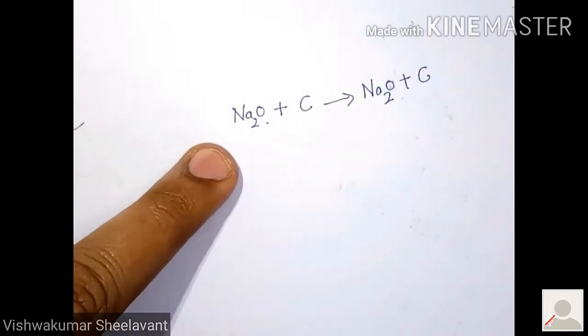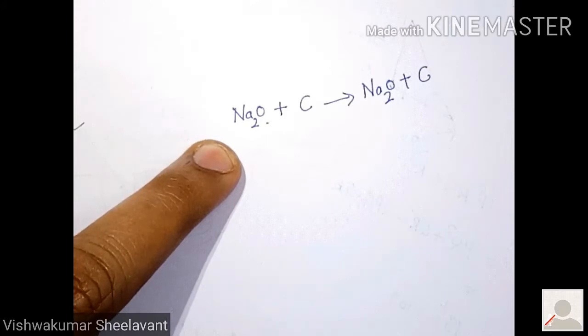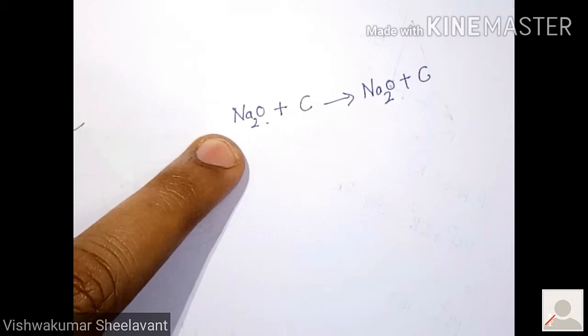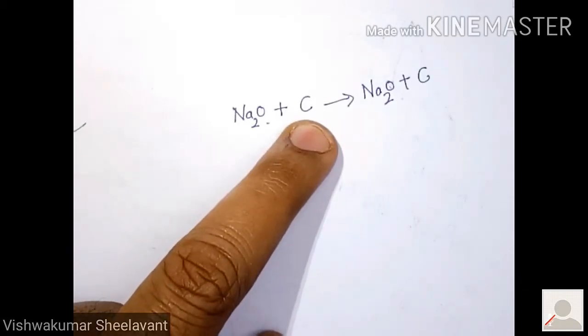So the metals which are at the top of activity series like sodium, magnesium, calcium and aluminum, etc., cannot be extracted by reducing their oxides by reacting them with carbon in this way. It is not at all possible.